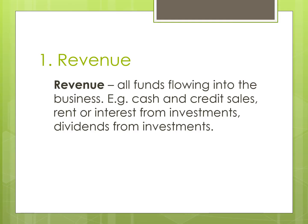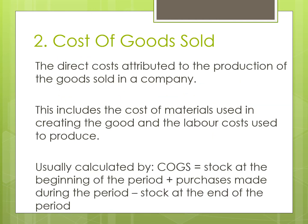Revenue is all the funds flowing into the business. That includes cash and credit sales, rent coming in from investments, interest, dividends — any money that you are earning. Cost of goods sold is the direct cost attributed to producing those goods sold. That includes things like your materials, labor costs, and any inputs you've been using in production.